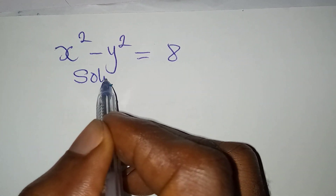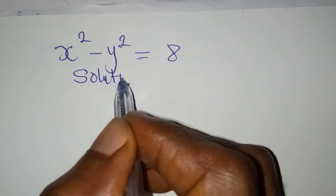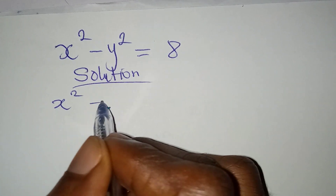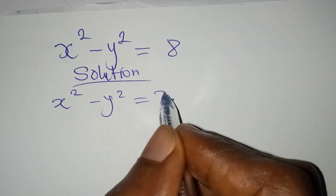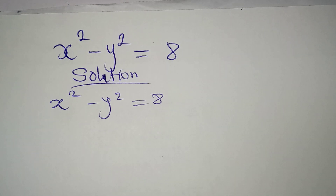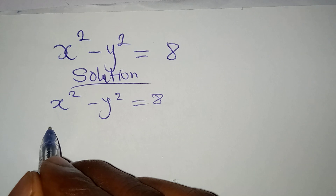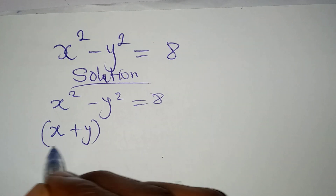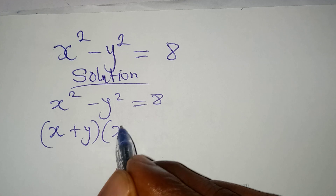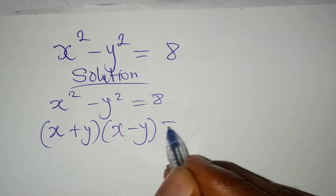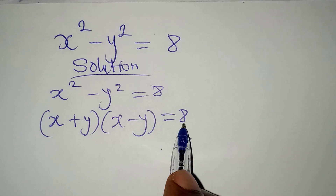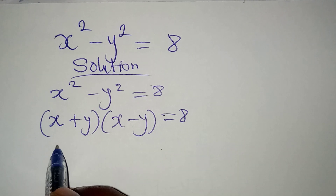Hello everyone, let's work on this very quickly. We have x squared minus y squared equals eight. The first thing to be done is to apply difference of two squares, so we have x plus y into brackets x minus y equals eight, which can be written as four times two.